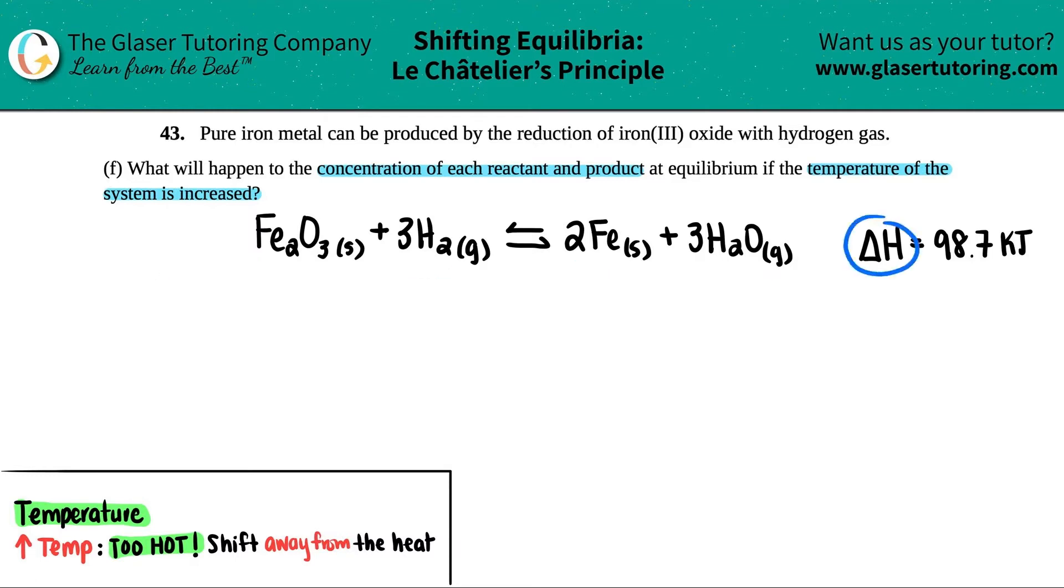Remember, delta H is enthalpy. It's the heat that's produced during this reaction. Now I don't care what number this is. This could have been a thousand or it could have been one. The whole thing is that this is a positive number. And remember, delta H's that are positive, this is endothermic.